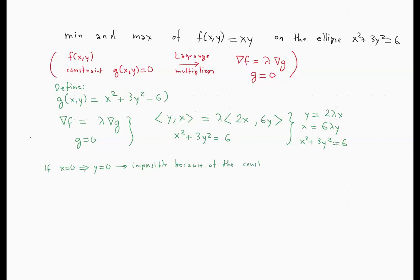Similarly, if y were equal to 0, then x would be 0 from the second equation, which is impossible because of the constraint. Also, if lambda were equal to 0, then both equations would give x = 0 and y = 0, which is again impossible because of the constraint equation.